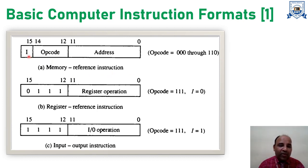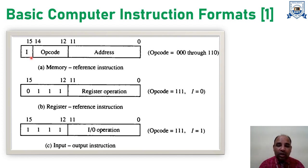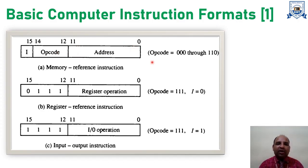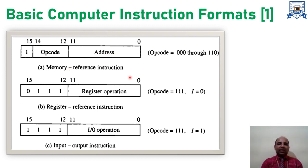Additionally, bit number 15 — the 16th position — is represented by I. When I is 0, it is a direct address; when I equals 1, it is an indirect address. So this bit decides the type of addressing mode: I equal to 0 means direct addressing mode. The remaining 12 bits, ranging from 0 to 11, represent the addresses or operands in the memory reference instruction.